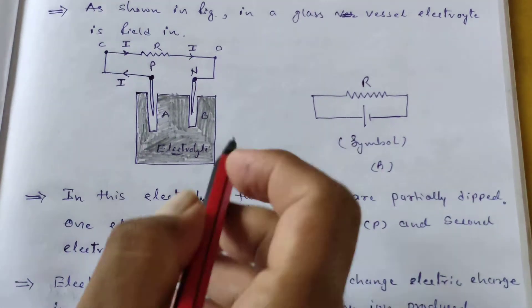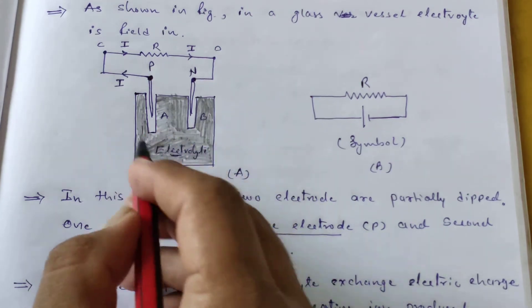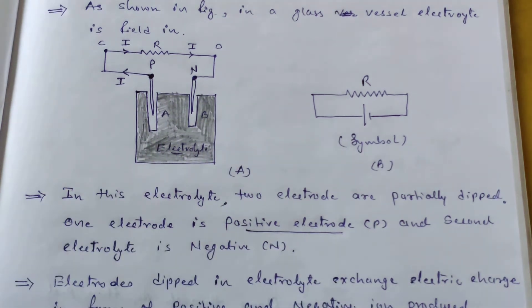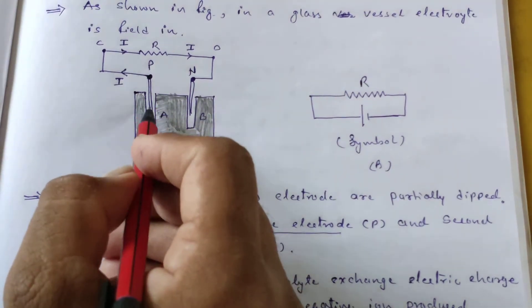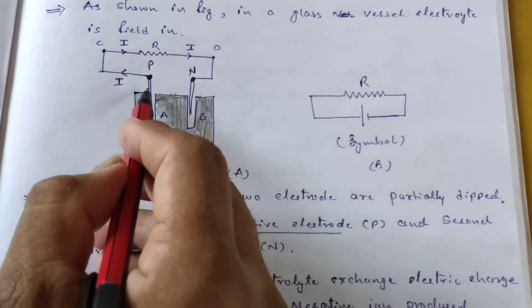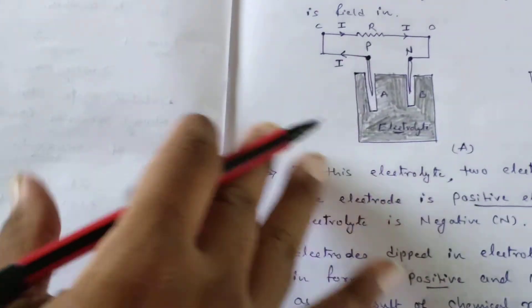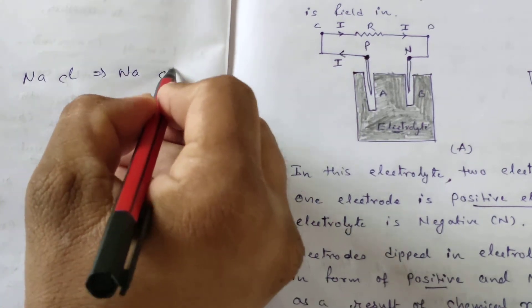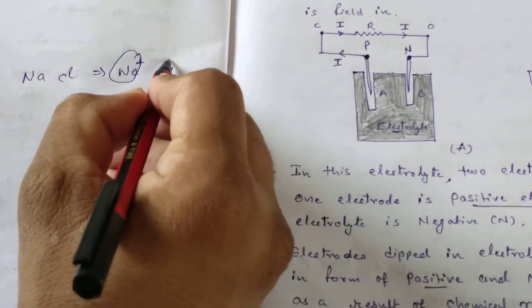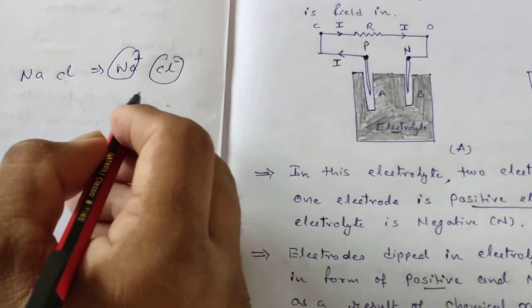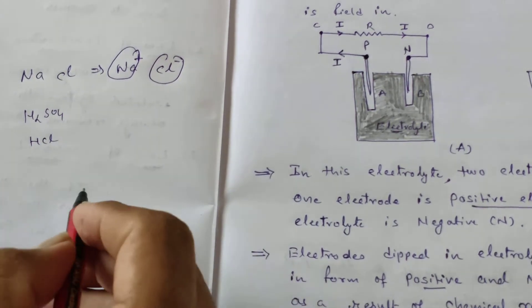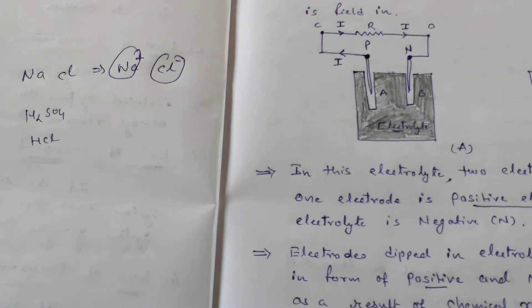Due to chemical reaction, ions are separated. Positive ions move towards the negative electrode, and negative ions move towards the positive electrode. As they reach their respective electrodes, they move in terms of charges. For example, in a solution of NaCl, Na and Cl are separated — Na becomes a positive ion and Cl becomes a negative ion. Other examples include H₂SO₄ and HCl — these are all electrolytes.